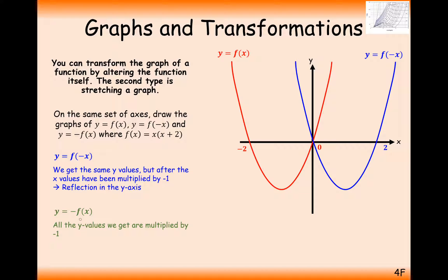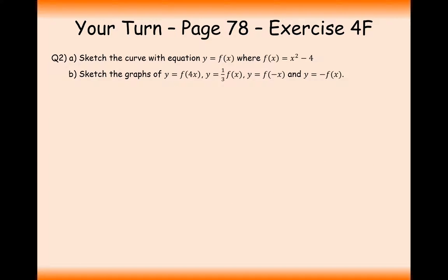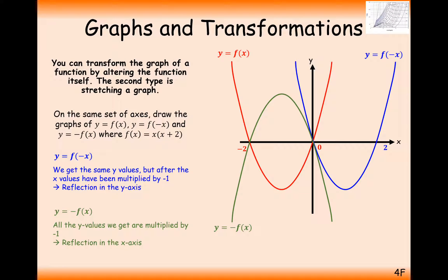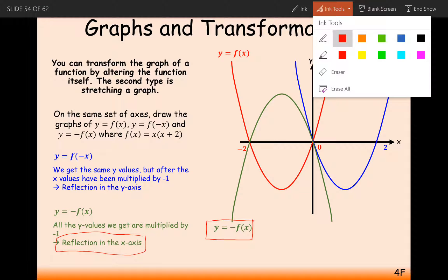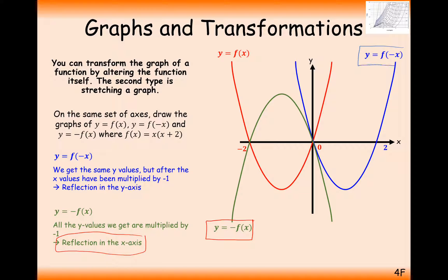Now for y equals minus f of x: all the y-coordinates are going to be negated, so the graph looks like it's been reflected over the x-axis. For your notes: y equals minus f of x is a reflection in the x-axis, and y equals f of minus x is a reflection in the y-axis.